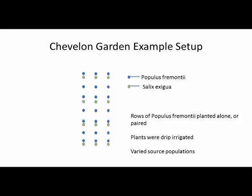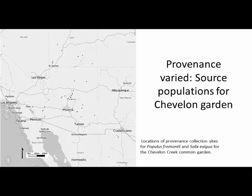The plants were planted in rows — either a Populus paired with a Salix, or a Populus alone — all drip-irrigated and from a variety of source populations. This map shows the source locations for our trees. Winslow is approximately here, and we have quite a variety of sources — some from higher, colder elevations and some from lower elevations. Originally there were even more source populations, but some died after the initial planting.